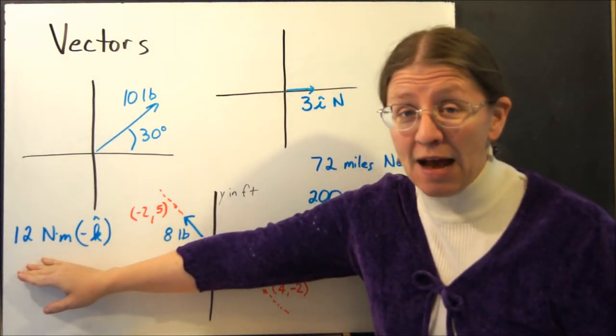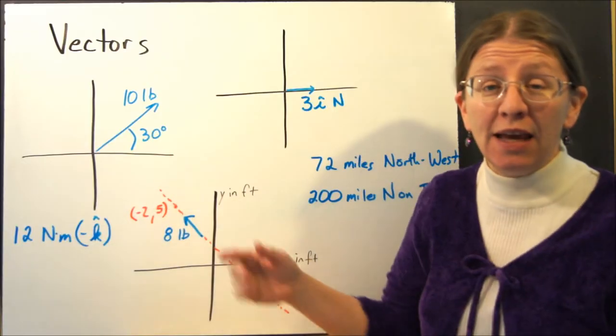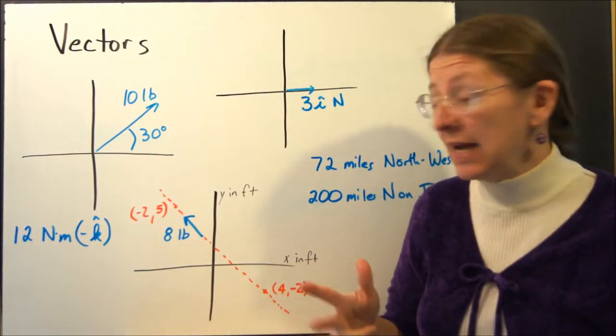I don't even really need to have the axes. I can just tell you what the direction is. i, j, and k are the unit vectors along the x, y, and z axes.